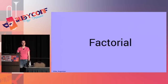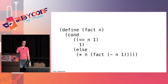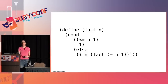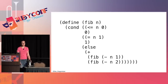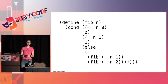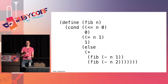We use recursion a lot in functional languages. Here's factorial in Racket using cond: if n is 1 or less, return 1 — because factorial of 0 and 1 are both 1 — otherwise return n times factorial of (n-1). For Fibonacci: if n ≤ 0 return 0, if n = 1 return 1, otherwise return the sum of fib(n-1) and fib(n-2).